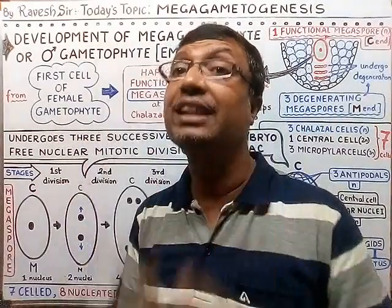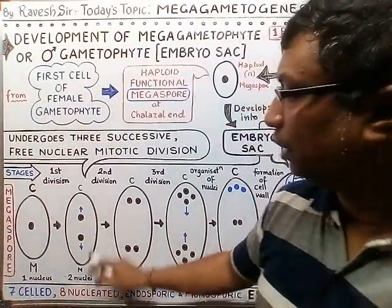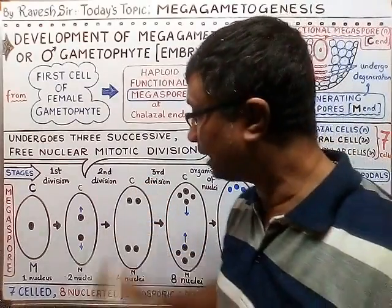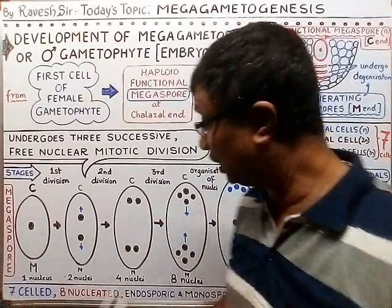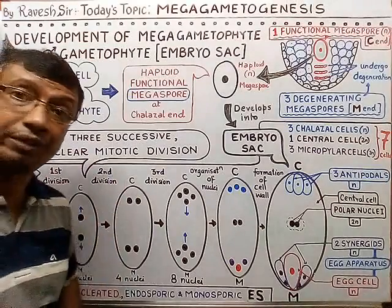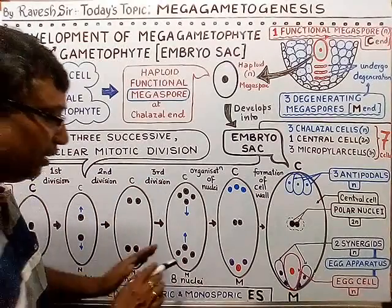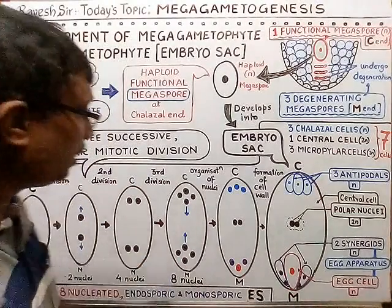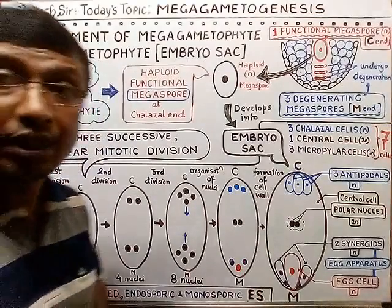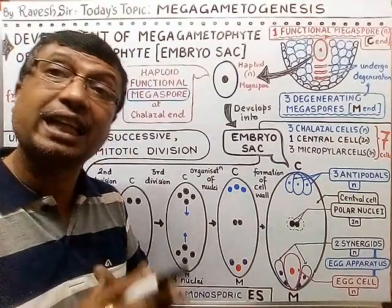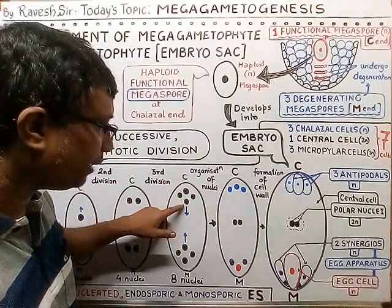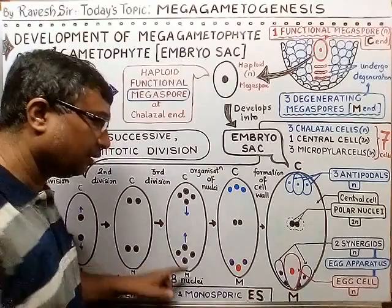After the three divisions are complete, we can see the arrangement: two nuclei move toward the chalazal end, and after the second division, four nuclei are formed total. Then the four nuclei undergo a third round of division to give eight nuclei. Looking at the picture, there are four nuclei at the chalazal end and four at the micropylar end. Then migration occurs — one nucleus from the chalazal end moves toward the opposite micropylar end.